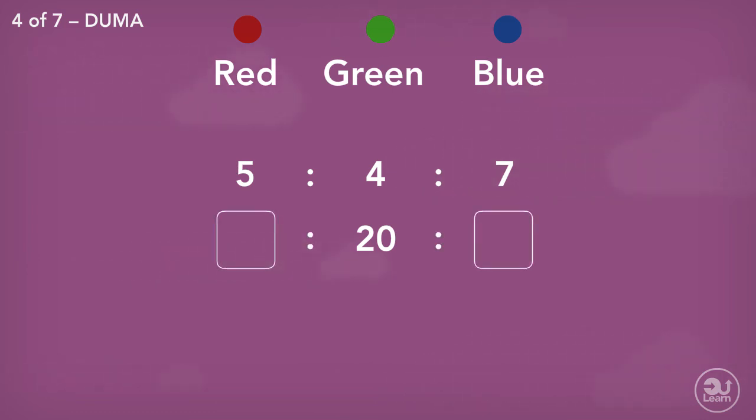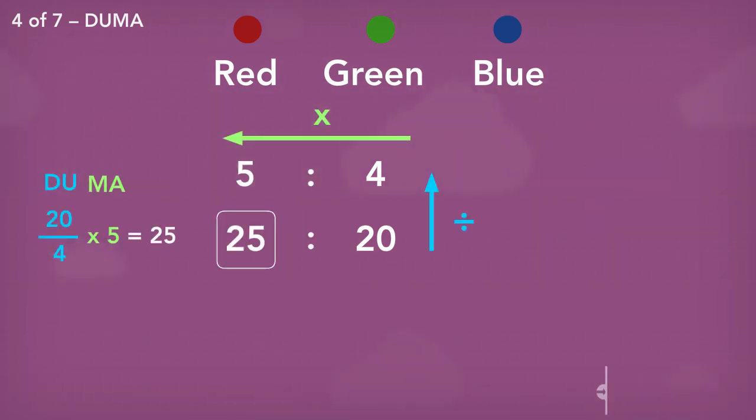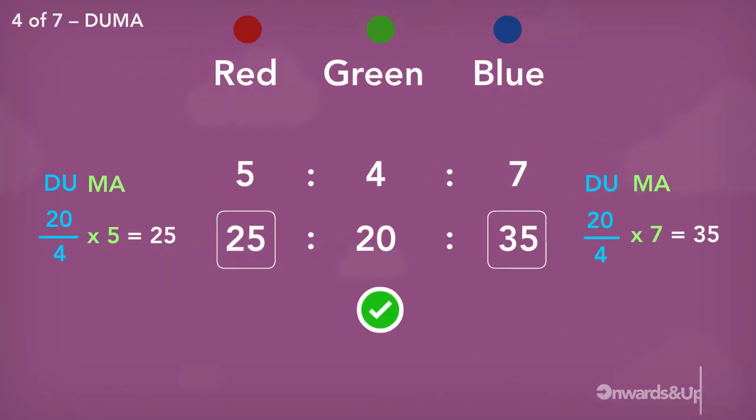Another quick example. Ratio of red to green to blue is 5 to 4 to 7. There are 20 greens. Find out how much red and blue. Laying out my information, I divide up, multiply across. Divide up, and multiply across again. And this will be our final answer.